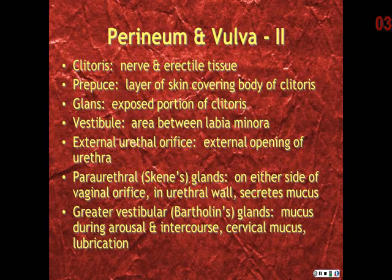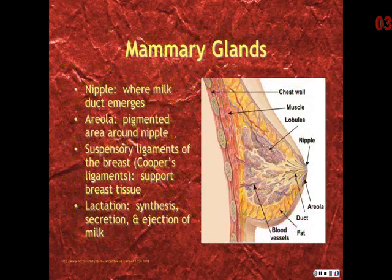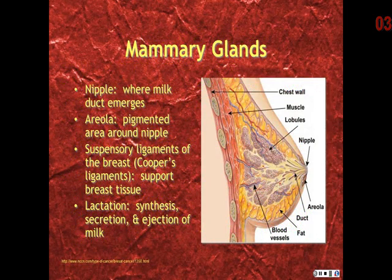The greater vestibular, or Bartholin's, glands also secrete mucus during arousal and intercourse, providing cervical mucus and lubrication. The mammary glands are for milk production. The nipple is where the milk duct emerges and is surrounded by a pigmented area called the areola. The suspensory ligaments of the breast, or Cooper's ligaments, help to support the breast tissue.